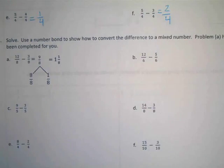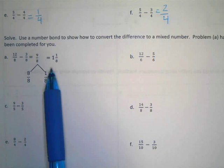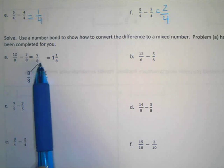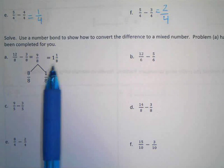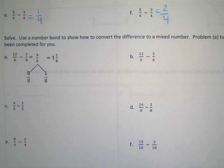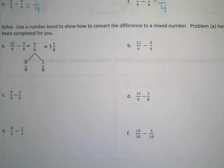All right, number three. Solve. Use a number bond to show how to convert the difference to a mixed number. Problem A has been completed for you. All right, so they did twelve-eighths take away three-eighths and got nine-eighths. Do you guys agree with that? Then they broke nine-eighths into eight-eighths and one-eighths. And then they got one and one-eighths. Do you guys agree? Yeah. Okay, me too. So let's go on to B and see if we can do the same thing as them.